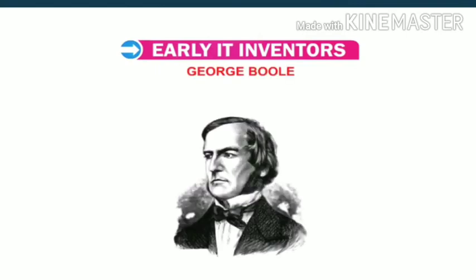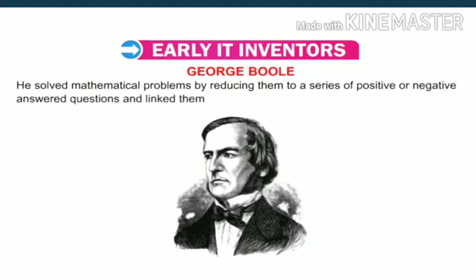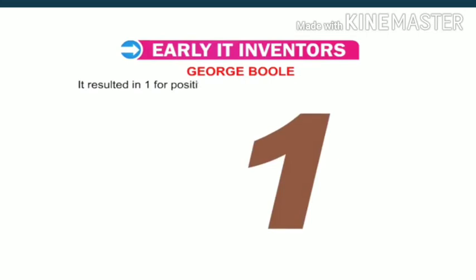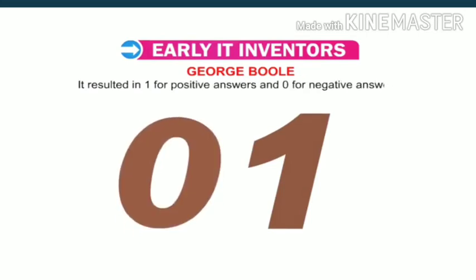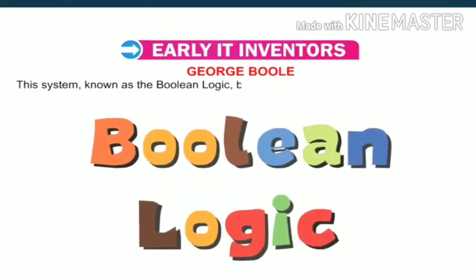George Boole was an English mathematician. He solved mathematical problems by reducing them to a series of positively or negatively answered questions and linked them with a binary system, resulting in 1 for positive answers and 0 for negative answers. The system, known as Boolean logic, became the fundamental principle for the design of computer circuits.